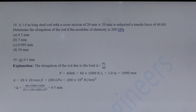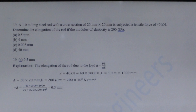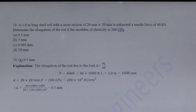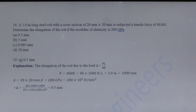Next question from strength of materials: A one-meter long steel rod with a cross-section of 20mm × 20mm is subjected to a tensile force of 40 kN. Determine the elongation of the rod if the modulus of elasticity is 200 GPa. The elongation is given by PL/AE. Here P = 40 kN, L = 1000 mm. Substituting the values gives an elongation of 0.5 mm.